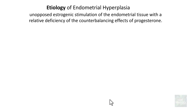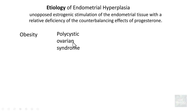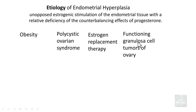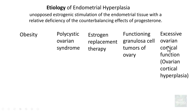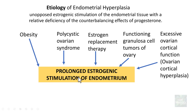The most important etiological factor is unopposed estrogenic stimulation of the endometrial tissue with a relative deficiency of the counterbalancing effects of progesterone — meaning more estrogen and less progesterone. Risk factors include obesity, polycystic ovarian syndrome, extraneous estrogen replacement therapy, functioning granulosa cell tumors of the ovary, and excessive ovarian cortical hyperplasia. All these factors result in prolonged estrogenic stimulation of the endometrium, leading to endometrial hyperplasia.